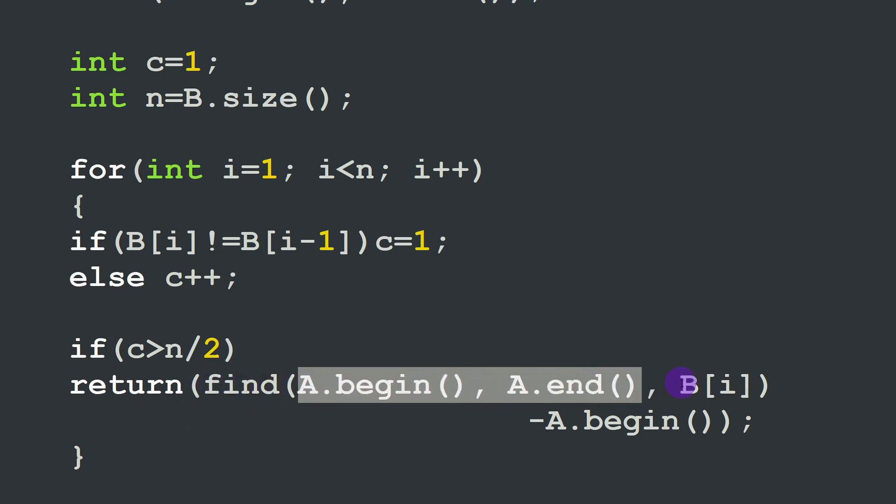In order to return its index in vector A we are going to use the function find and look in vector A for the element B[i], the current element that we are reading in vector B. Since this function returns an iterator, a pointer, we have to make the difference between the position of this element that was found in A minus the position of the first element of A which is A.begin. So this difference here is just to get the index of the element B[i] in vector A.